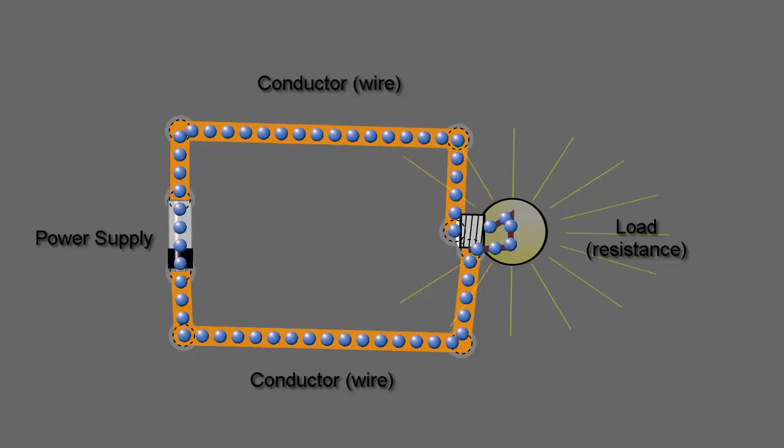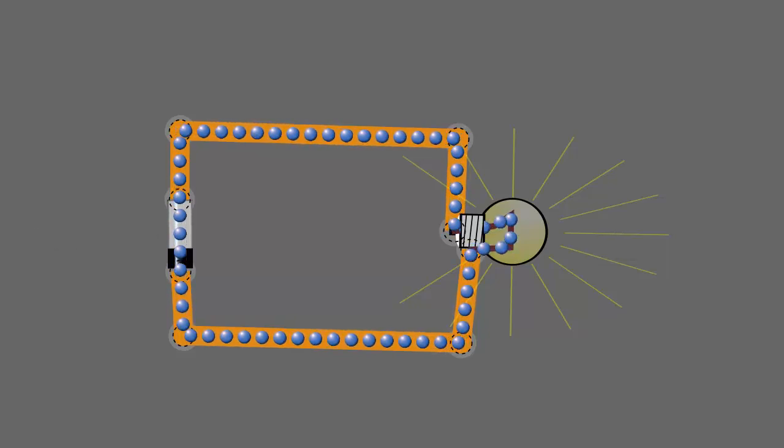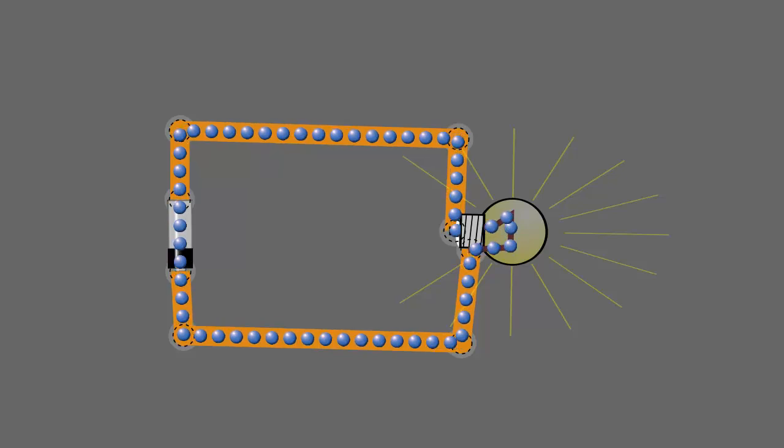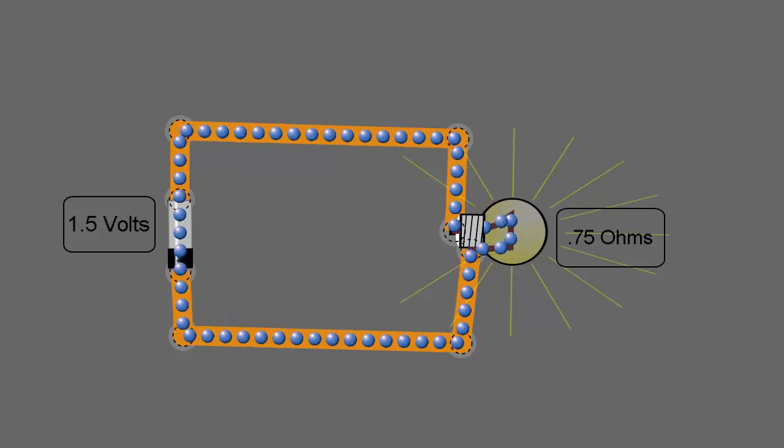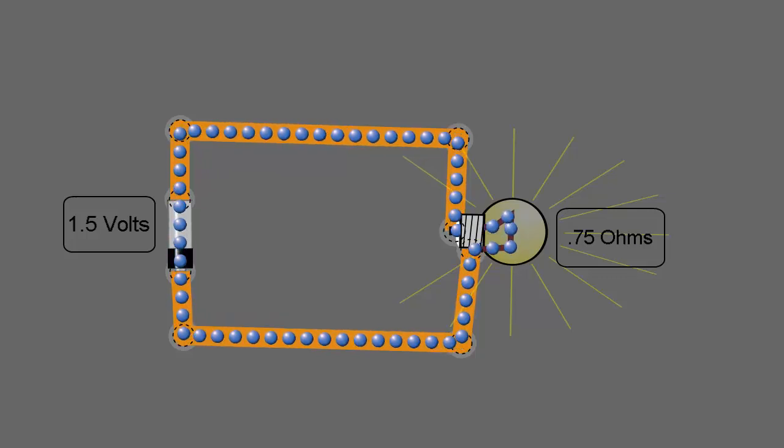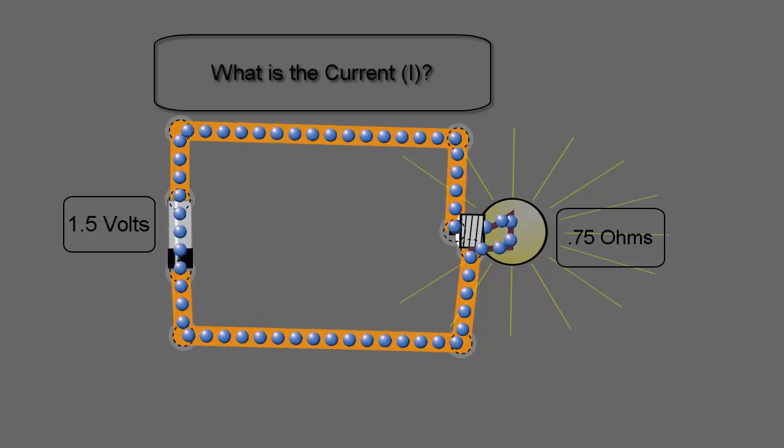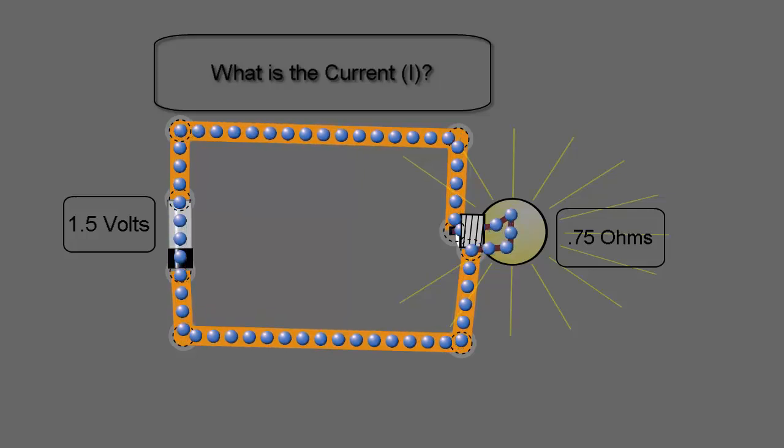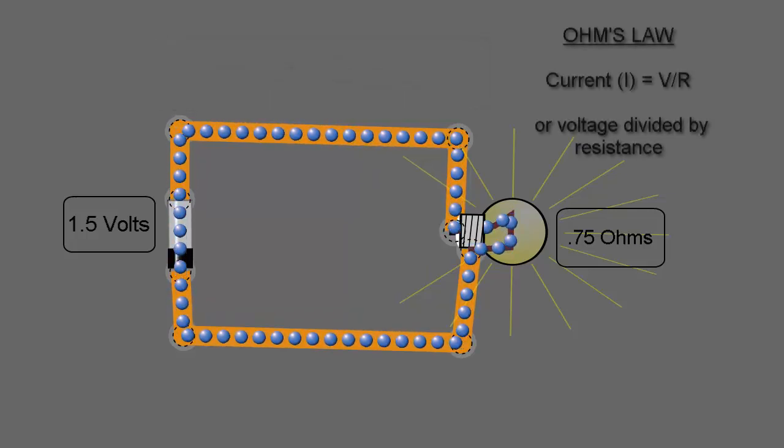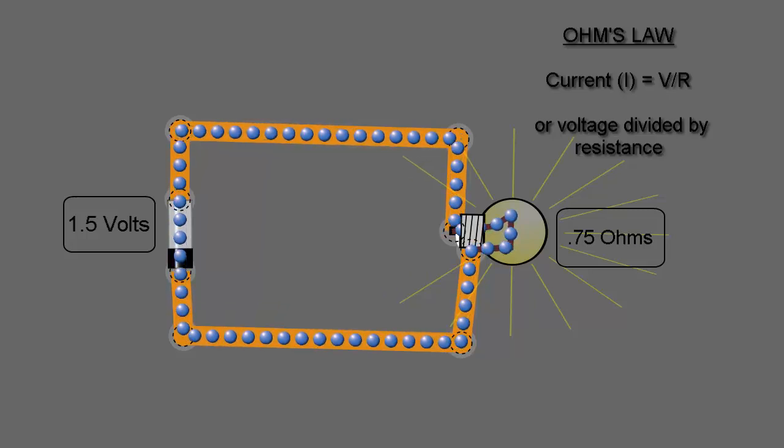Now in this particular circuit, I set the resistance of the bulb to 0.75 ohms, and we already said the battery voltage was set to 1.5 volts. So the question is, what's the current in this circuit? And the formula we use to calculate current is Ohm's law. And Ohm's law tells us that the current in a circuit is equal to the voltage in the circuit divided by the resistance of the circuit.